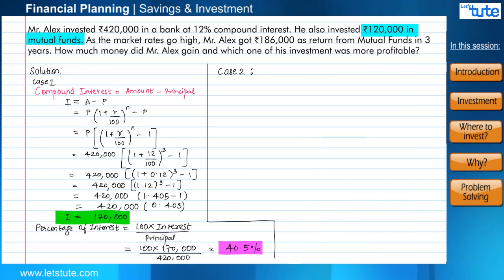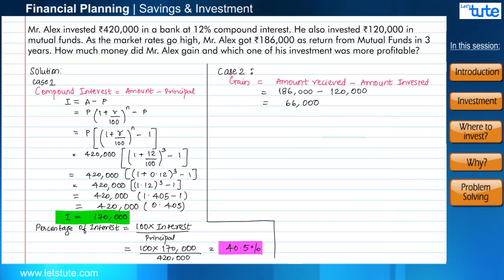Mr. Alex invested ₹120,000 for three years and the amount received by him was ₹186,000. So here the calculation of gain is very simple. It will be amount received minus amount invested, which comes to ₹66,000. Now here we also need to calculate the percentage of interest the same way we did it in the bank investment.